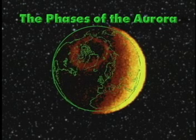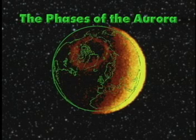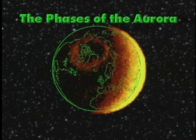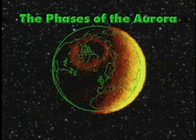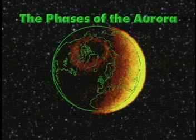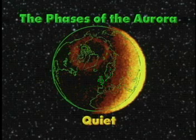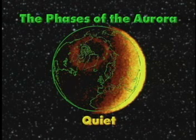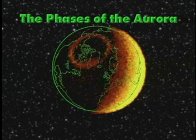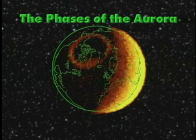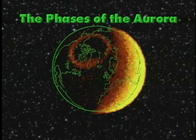The first image shows a quiet oval before any activity begins. This is called the quiet phase. Right before we see any bright emissions, we can observe the oval getting bigger and moving further towards the equator.